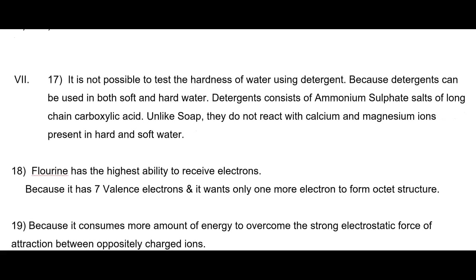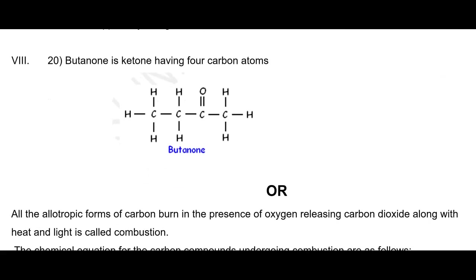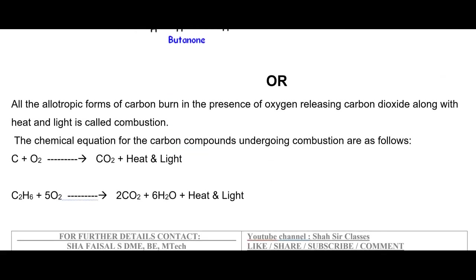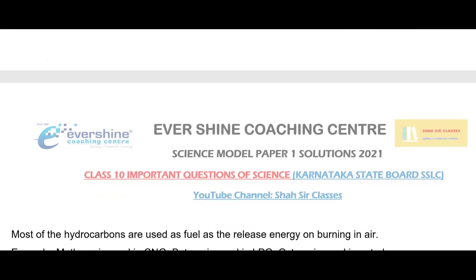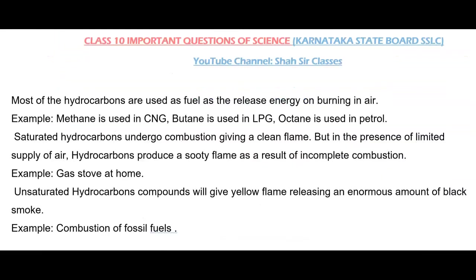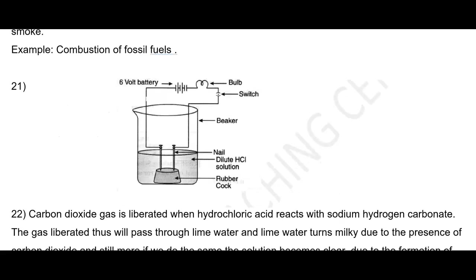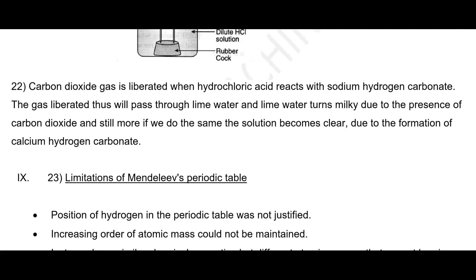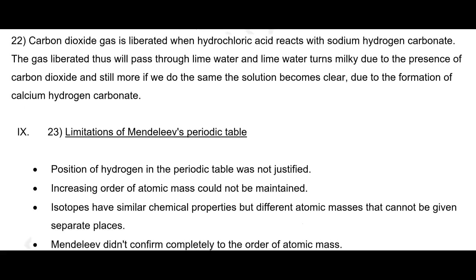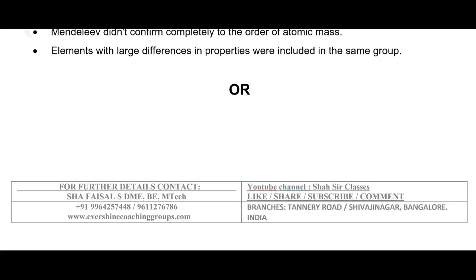This is the seventh main — question number 17, 18, 19, 20 and there is a choice here. They asked us to explain about the combustion reaction. We have explained by using the chemical reaction as well as by giving some basic examples which we see in our daily life. And this is question number 21, the diagram. This is question number 22. This is question number 23 — limitations of Mendeleev's periodic table — or there is a choice again here.